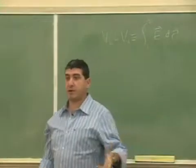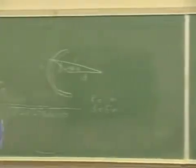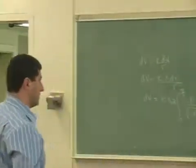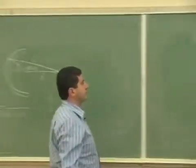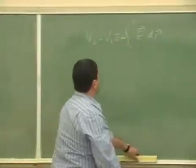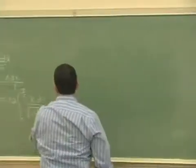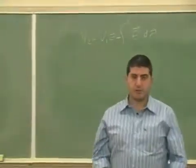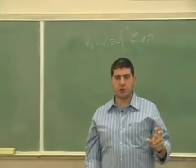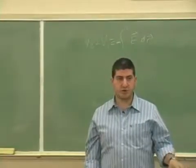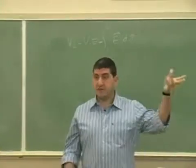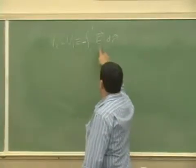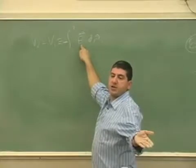Remember when we first started this chapter, I defined the electric field as V2 minus V1 is equal to negative of the integral from 1 to 2. So why am I reintroducing this? There are a few cases where if you want to find the potential at a certain point, instead of using dV as kdQ over R and integrating that, you would use this definition of the potential and the electric field we calculated in the previous chapters.